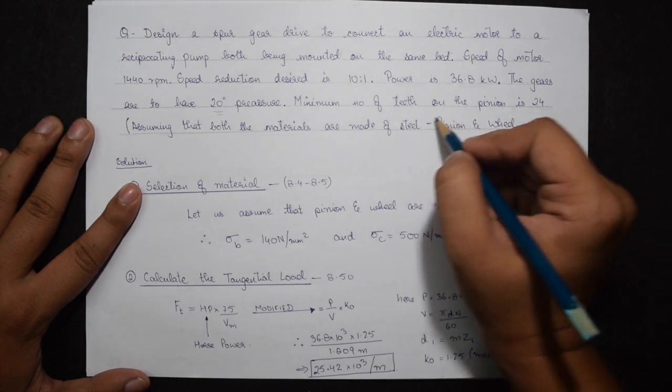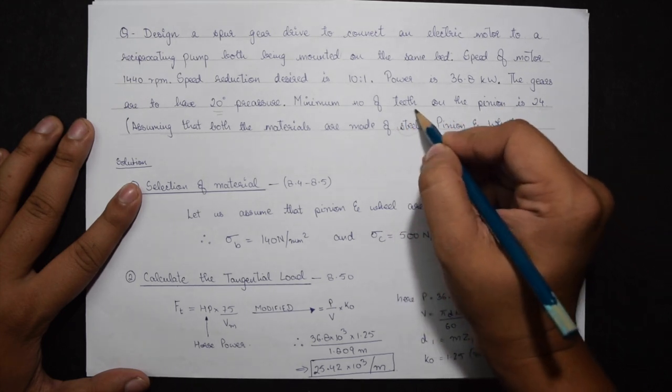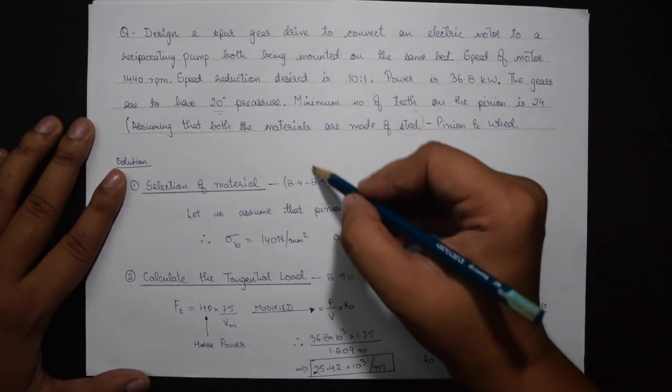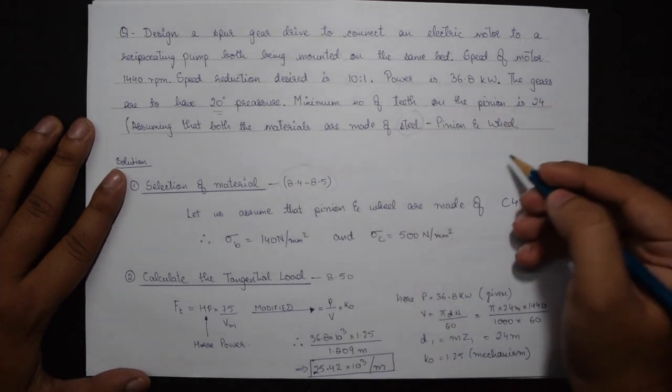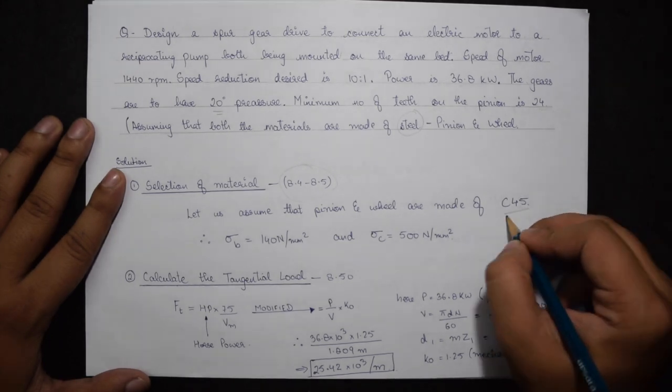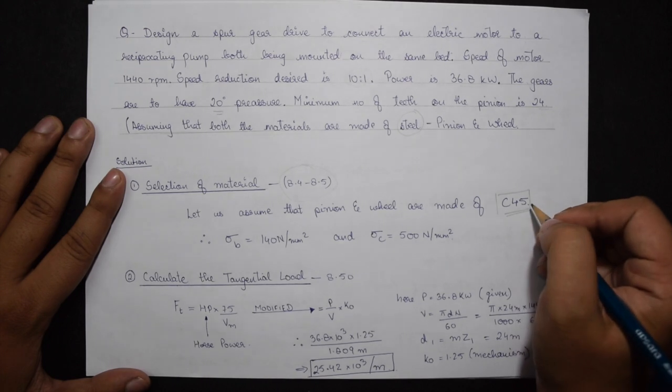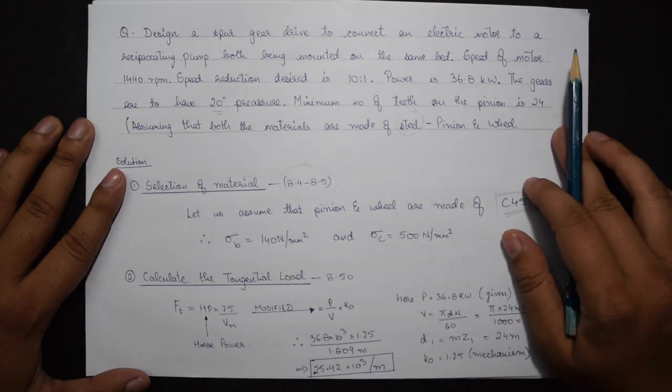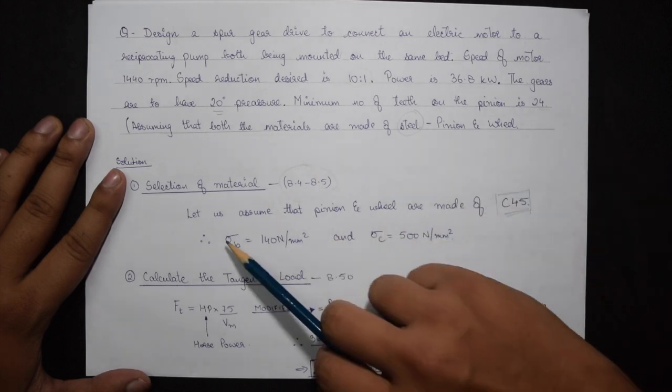Jumping onto the first step, which is selection of material from page 8.4 and 8.5. Let me choose the material C45. I can choose any material listed there. Also, let me write the value of sigma B and sigma C which will be used in the later steps.